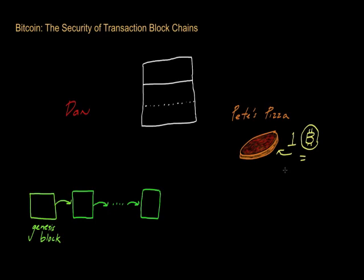Imagine that Dan received previously — let's say he received five Bitcoins from his cousin Carol. So Carol, who I'm going to label by C, gave to Dan five Bitcoins, which we can label as a B with a circle around it.